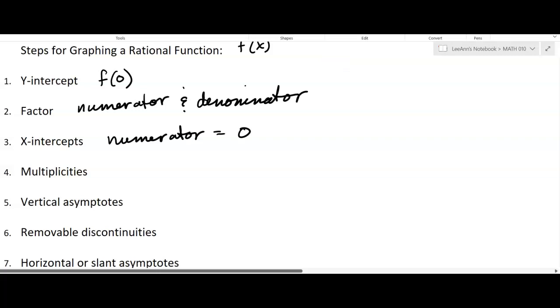For those x-intercepts, you want to find the multiplicities. And then that's going to tell you if stuff bounces, crosses, or flattens. Generally, they don't get too complicated when we're trying to do these by hand. So the degrees don't get extremely high.